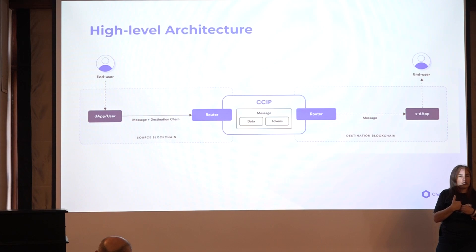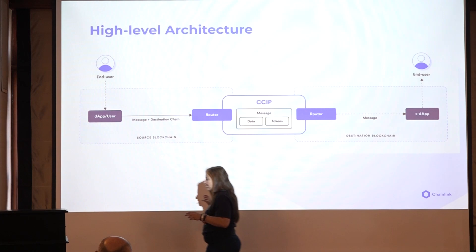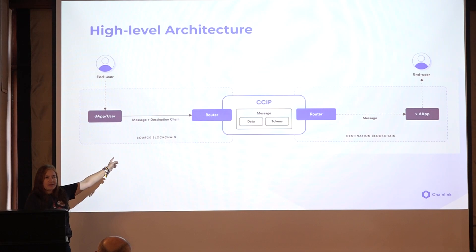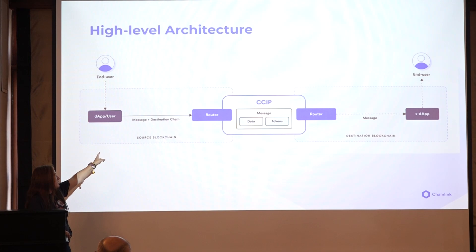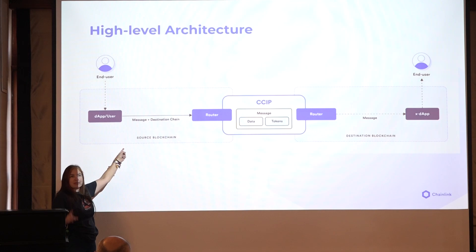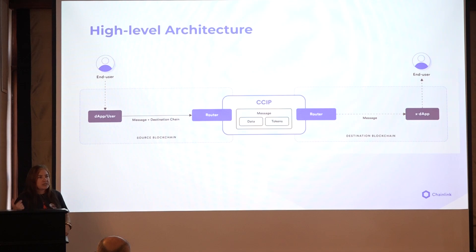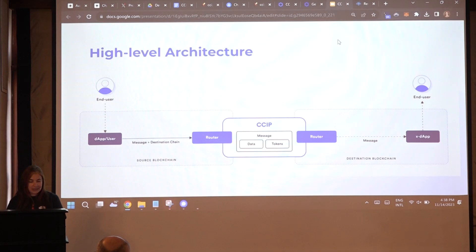The router sends the message to my destination minter. We are now creating the source minter — this is the part we're interacting with on the other side. Both contracts interact with the routers. I create a contract here where I define the router, send a message — the message will be the mint command — and specify the destination chain, which will be Sepolia. The router will manage this for me using the risk management network as well.